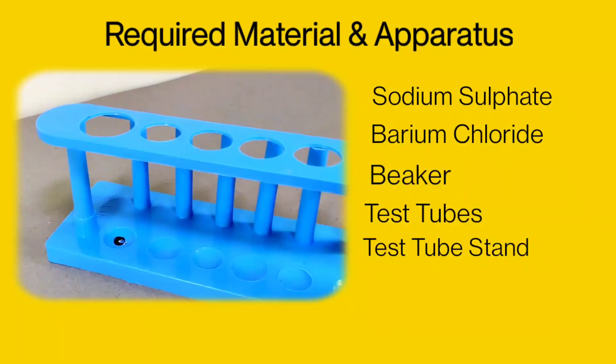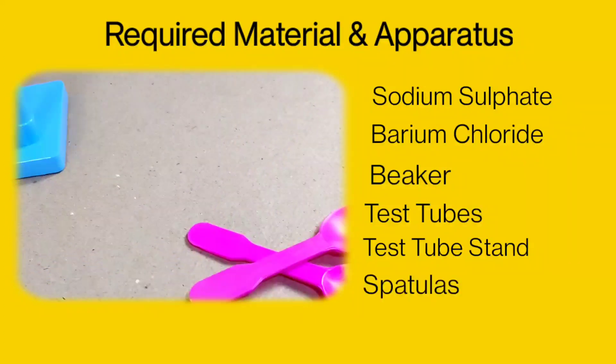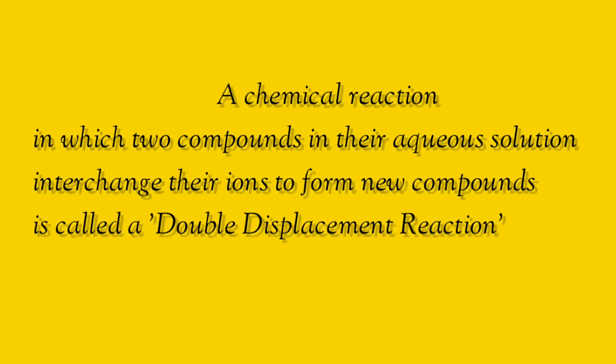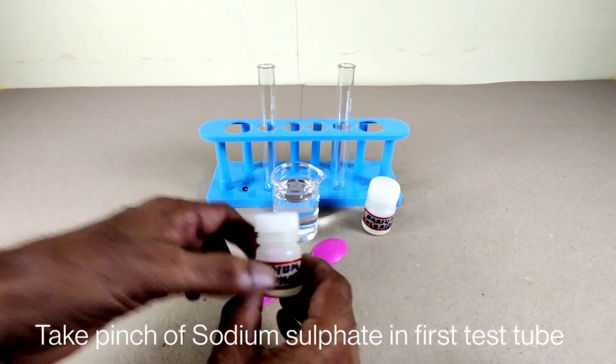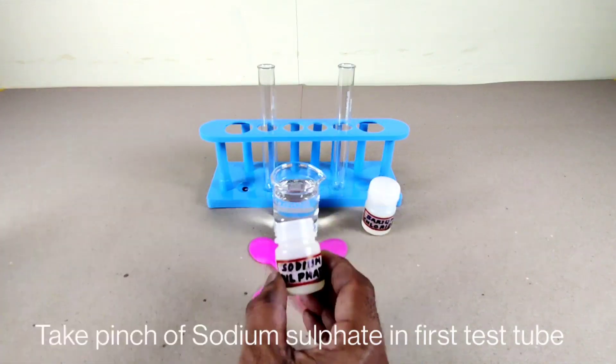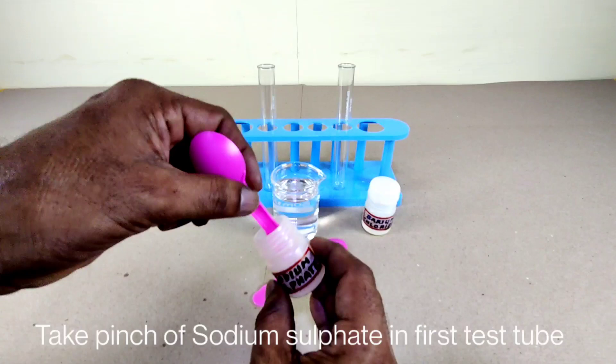A chemical reaction in which two compounds in their aqueous solution interchange their ions to form new compounds is called a double displacement reaction. Take a pinch of sodium sulfate in the first test tube.